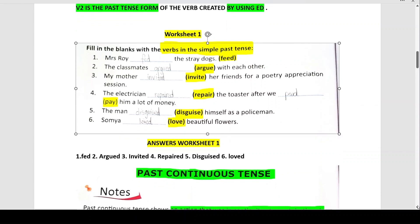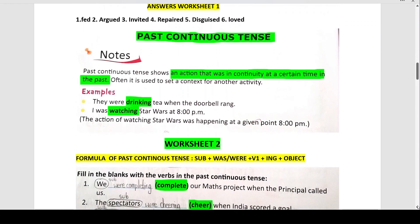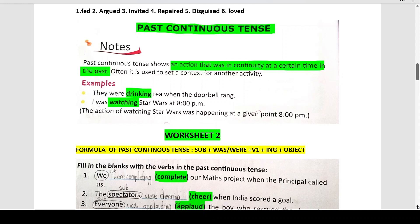Now students, whenever the word continuous comes, you have to remember that the verb is always added with ING. Your V1 form will always be added with ING whenever you have continuous tense, whether it is present continuous tense or past continuous tense or future continuous tense. Past continuous tense shows an action that was in continuity at a certain time in the past. Often it is used to set a context for another activity.